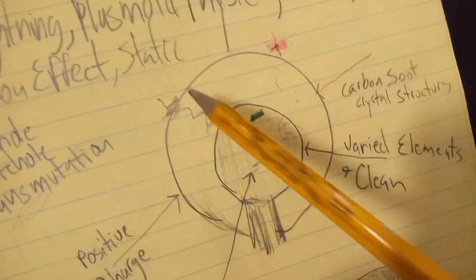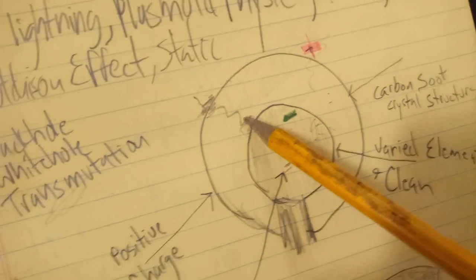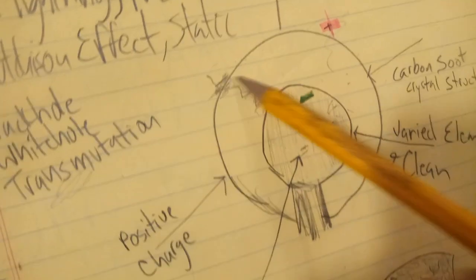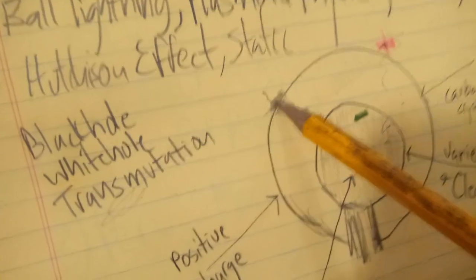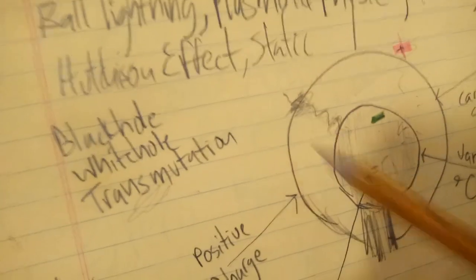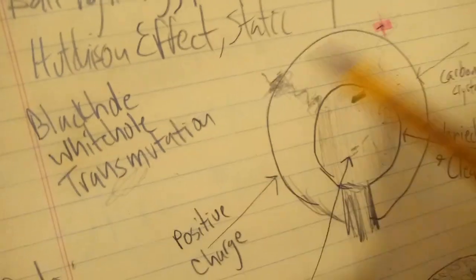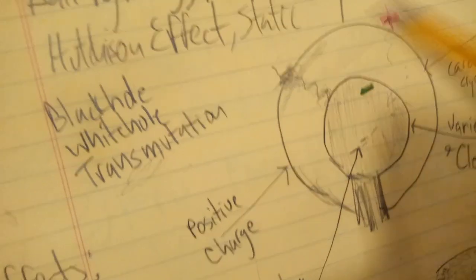On the outside, where the electrical vector potential and energy hits, there is carbon. There's a layer of carbon soot on the outside.